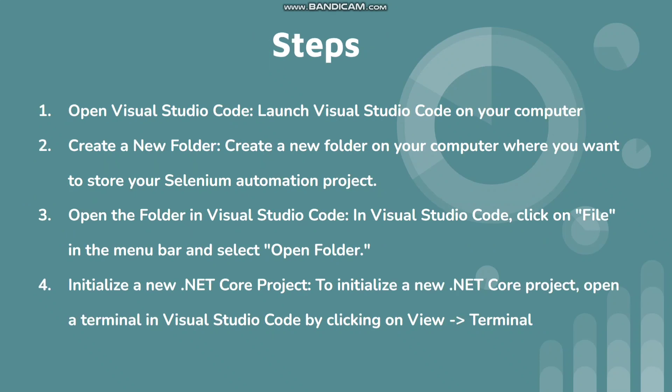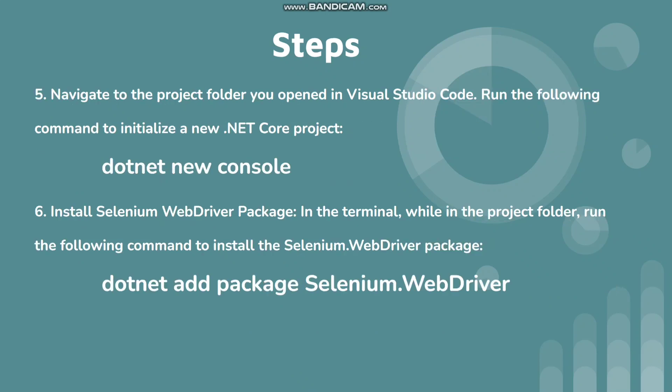Let's see the steps we need to do. First, we need to open Visual Studio Code. Then we need to create a new folder for the project. From Visual Studio Code, we need to open that folder via File > Open Folder. Then we need to initialize a new .NET Core project by opening the terminal from the View menu and selecting Terminal.